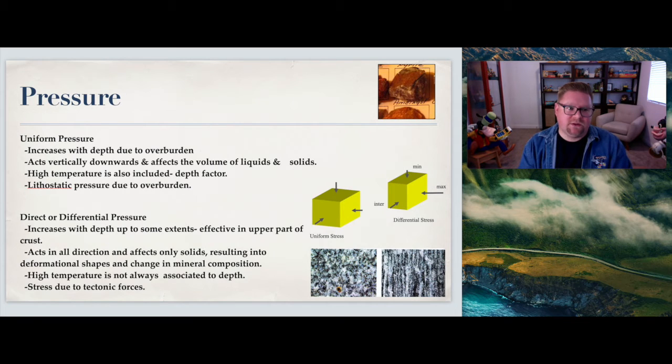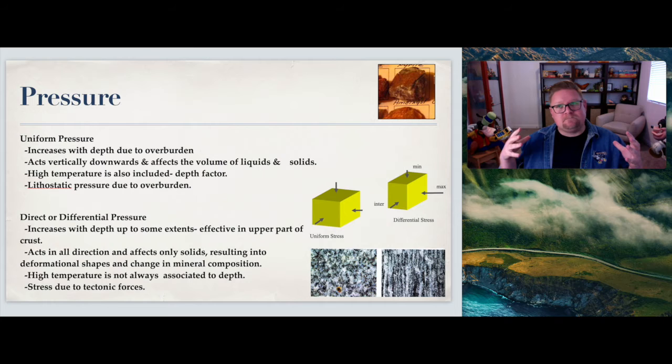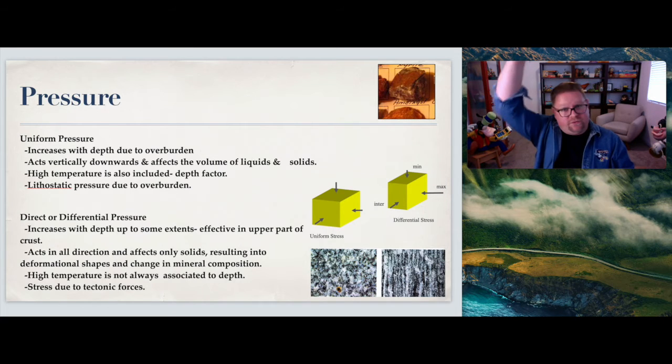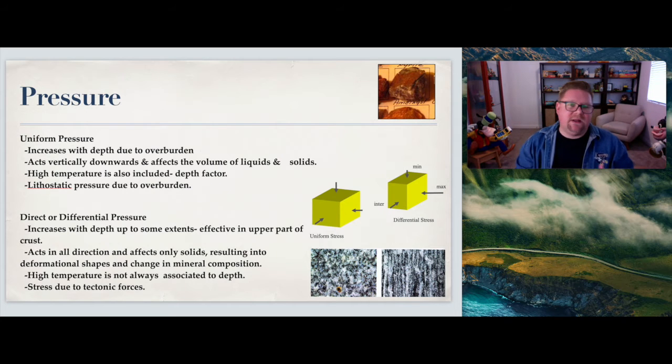Pressure - we have two types that we're going to be able to observe in this diagram: uniform pressure and direct or differential. Uniform, when you think of uniform, it's like atmospheric pressure - it's uniform for us that we have pressure pushing from above but from all different areas. When you think about atmospheric pressure on the average human, it's about the weight of an elephant or four tons of atmospheric pressure pushing down on you, but it's not just on your shoulders, it's all around, it's uniform. It increases with depth due to overburden, acts vertically downwards and affects the volume of liquids and solids. Lithostatic pressure due to that overburden. Uniform pressure is being pushed all the way around and then as it pushes down you can apply additional pressure thereafter.